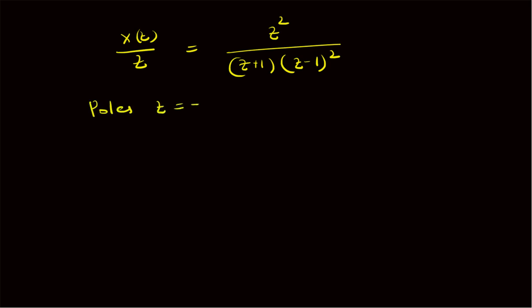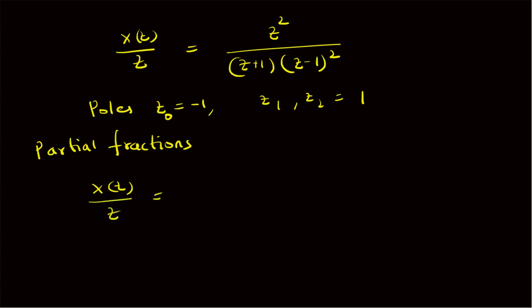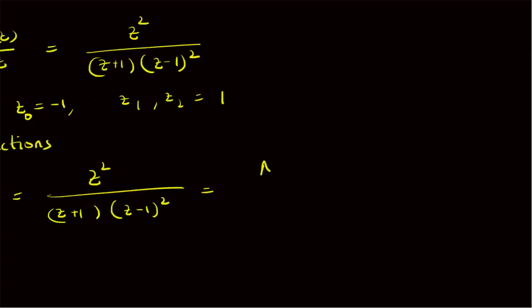So z₀ = -1 is one pole, and z₁ and z₂ are both at +1. To find the inverse z-transform we use partial fractions: X(z)/z = z² / [(z+1)(z-1)²] = A₁/(z+1) + A₂/(z-1) + A₃/(z-1)². That is the partial fraction expansion of X(z)/z. Now we have to find A₁, A₂, and A₃.